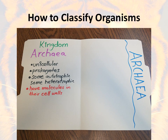Let's start with the Archaea domain. If we open that folder up, inside the Archaea domain we have the kingdom Archaea. The characteristics for an organism to be in the Archaea kingdom are: they are unicellular — so these organisms just have one cell — they are prokaryotes, meaning the cells do not have a nucleus. Some of them can be autotrophic and some can be heterotrophic. The big distinction here is that these have unique molecules in their cell walls — that will become more important a little bit later.